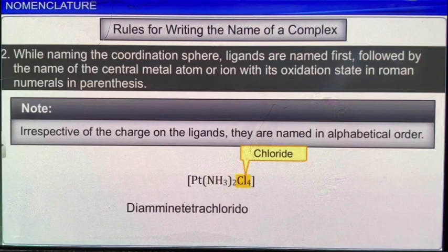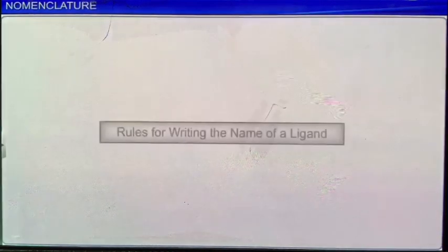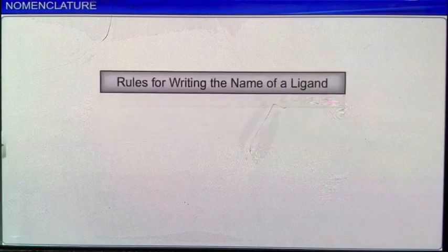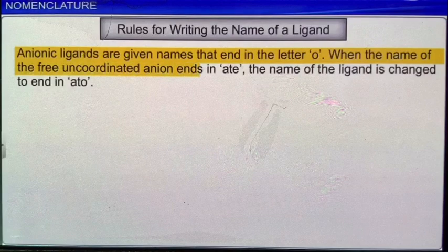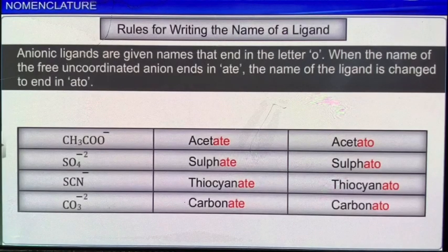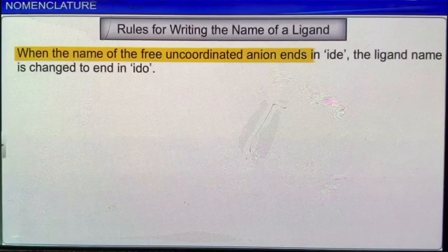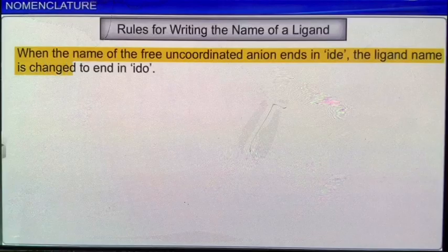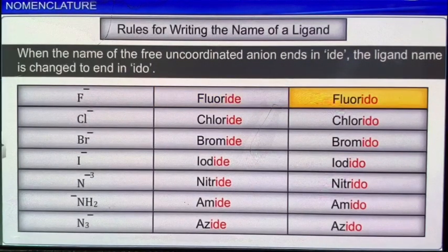IUPAC has also proposed rules for naming ligands. Anionic ligands are given names that end in the letter O. When the name of the free uncoordinated anion ends in -ate, the name of the ligand is changed to end in -ato. For example, acetate becomes acetato, sulfate becomes sulfato, thiocyanate becomes thiocyanato, and carbonate becomes carbonato. When the name of the free uncoordinated anion ends in -ide, the ligand name is changed to end in -ido. For example, fluoride becomes fluorido, chloride becomes chlorido, bromide becomes bromido, iodide becomes iodido, nitride becomes nitrido, amide becomes amido, and azide becomes azido.